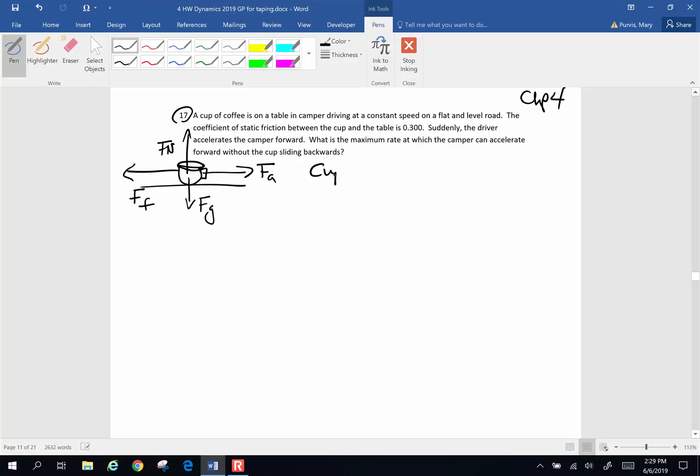For the cup not to move, we want the sum of the forces in the horizontal direction have got to equal zero. That's kind of the trick in this whole problem. So as we sum the forces horizontally, we have to look at situations where those are going to equal zero and the sum of the forces vertically are going to be zero.